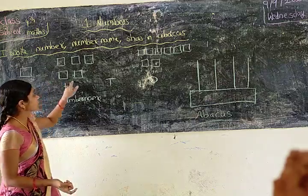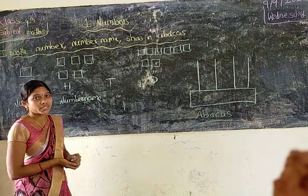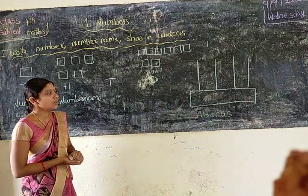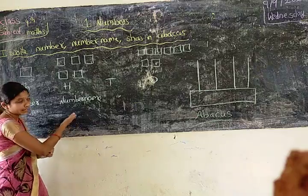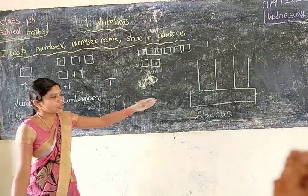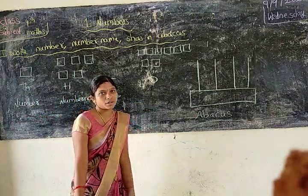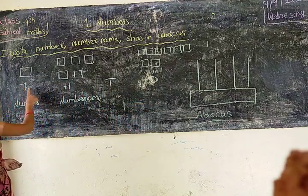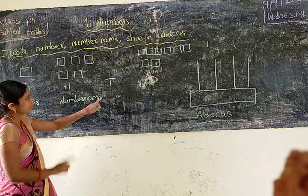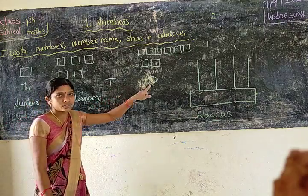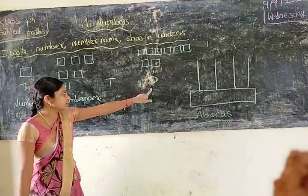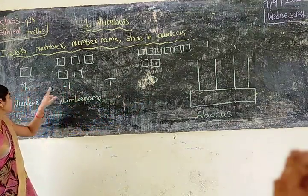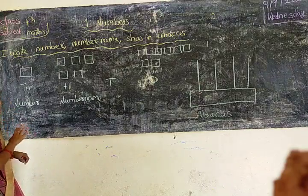We have some boxes here. Count the boxes and write their names, and also write the spelling and show on the abacus. First of all, we have thousands, hundreds, tens, and ones places.